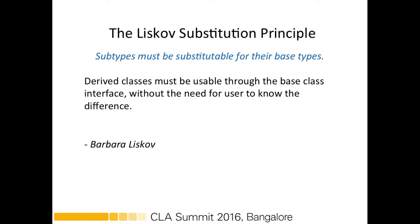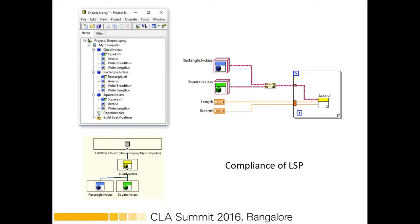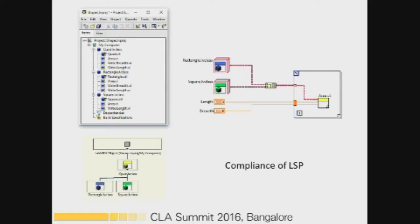The third principle is the Liskov Substitution Principle: a child class should be substitutable for its parent without the caller knowing. The code on the left is a violation of LSP because a square is treated as a child of rectangle. A rectangle has two different dimensions, so in the first iteration it works perfectly well, but when we run the second iteration we get a square object. Both rectangle and square should instead inherit their properties from a quadrilateral class.